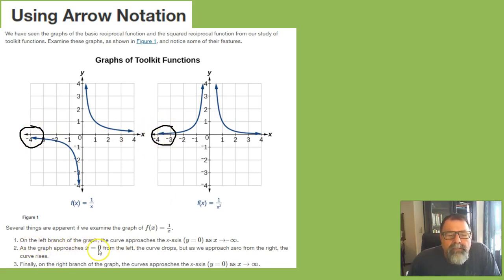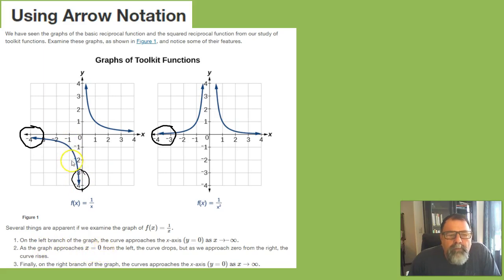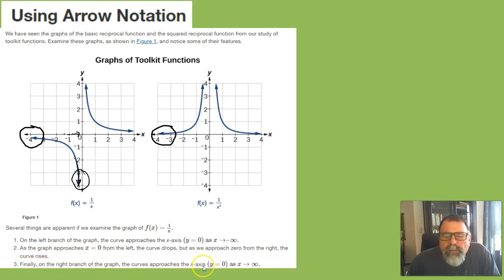As the graph approaches x equals 0 from the left, the curve drops; but as we approach 0 from the right, the curve rises. As we get closer to 0 from the left, the y-values are going to negative infinity. And finally, on the right branch of the graph, the curve approaches the x-axis — y equals 0 — as x goes to infinity.